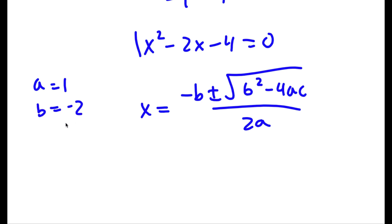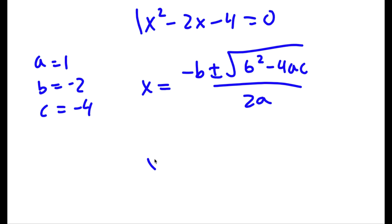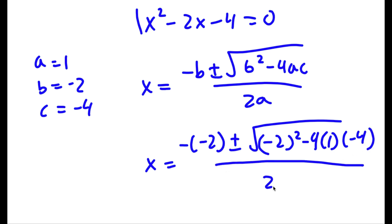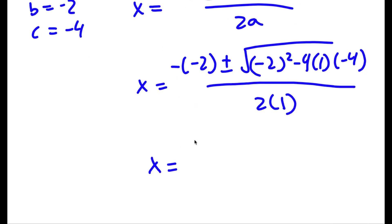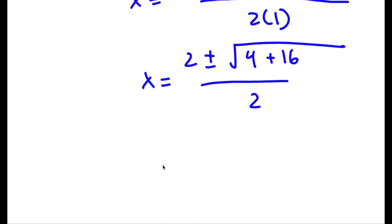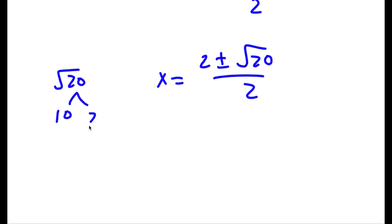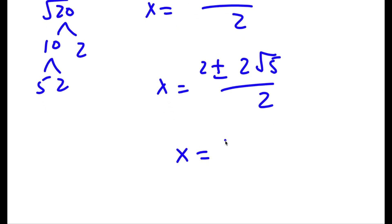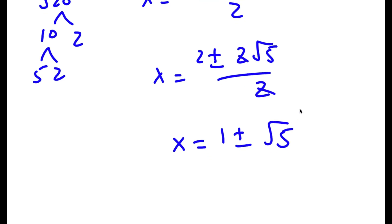Now to solve this problem, I can simply use the quadratic formula, which is negative b plus or minus the square root of b squared minus 4ac all over 2a. So in this case, a is equal to 1, b is equal to negative 2, and c is equal to negative 4. So now I have x equals negative of negative 2, plus or minus the square root of negative 2 squared minus 4 times 1 times negative 4, all over 2 times 1. Simplifying: negative negative 2 is positive 2, plus or minus the square root of 4 plus 16, all over 2. That gives x equals 2 plus or minus the square root of 20 over 2. The square root of 20 is 2 root 5, so dividing by 2 gives x equals 1 plus or minus the square root of 5. So this is my answer.